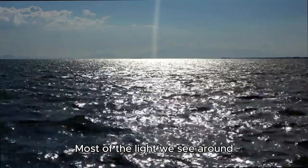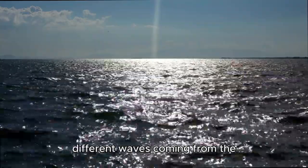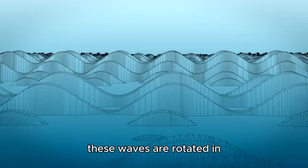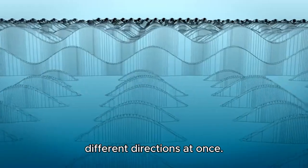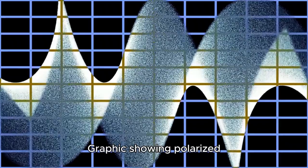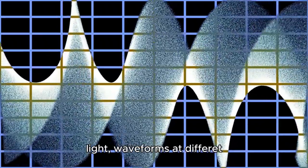Most of the light we see around us is a combination of many different waves coming from the sun and other sources. The peaks and valleys of these waves are rotated in different directions at once. In other words, the light is in a superposition of these different polarized states. Graphics showing polarized light, waveforms at different angles, on an axis polarization of light.